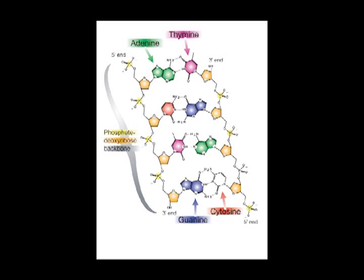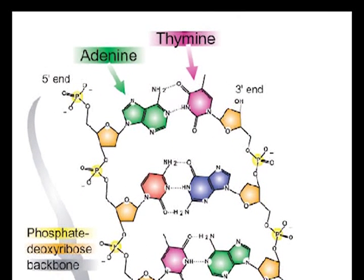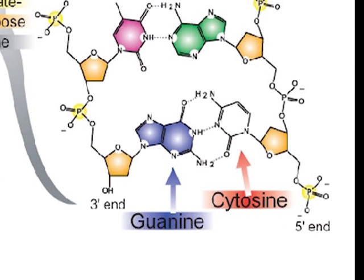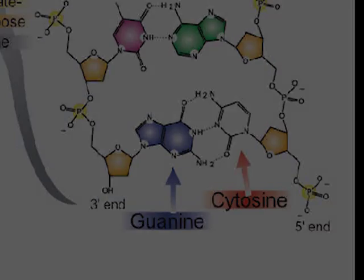The nucleotides form complementary pairs in the DNA double helix. Adenine (A) is always opposite to thymine (T), and cytosine (C) is always opposite to guanine (G).